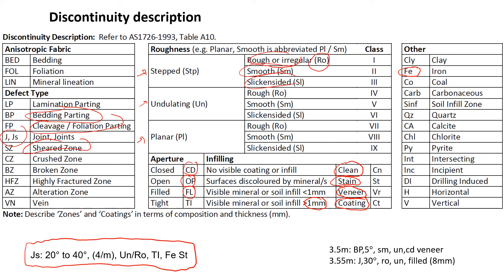Now let's see what we can read from the borehole. Here is an example statement: we have joints inclined to the horizontal at 20 to 40 degrees, spacing and frequency of four joints per meter, roughness is undulating and rough surface, we have tight aperture, and staining of a brownish color due to iron. The example I showed in the first slide is more detailed, providing the depth at which each discontinuity was observed.